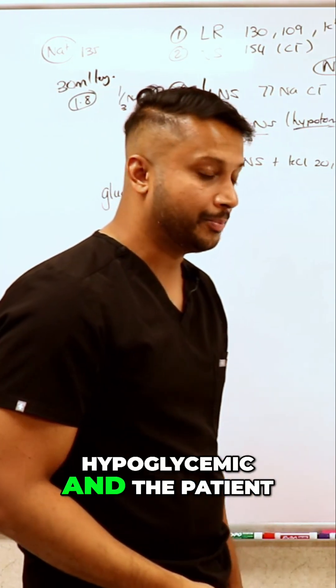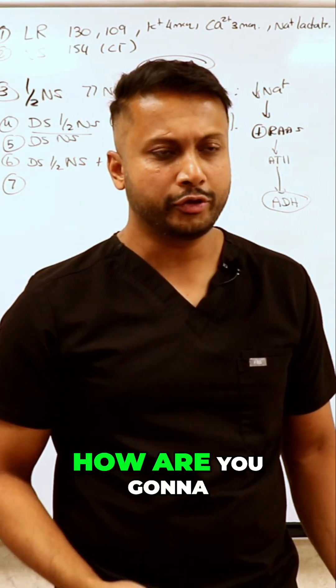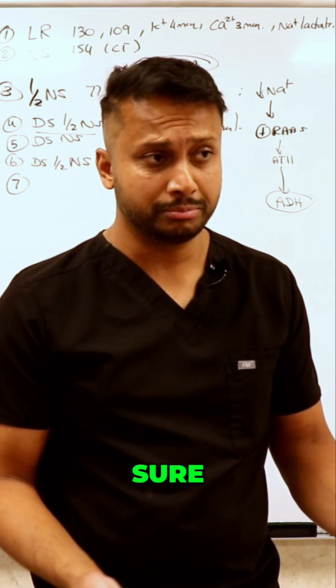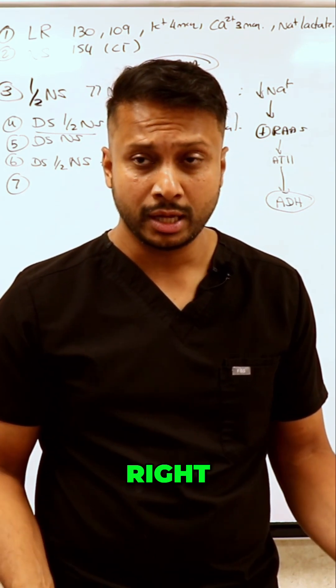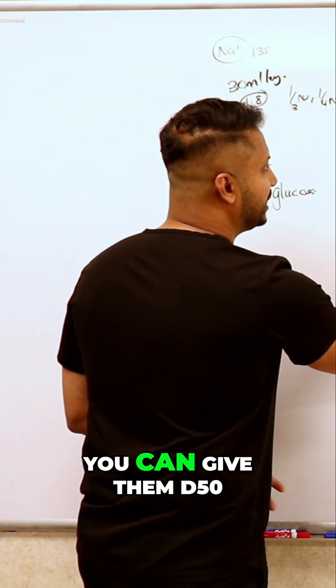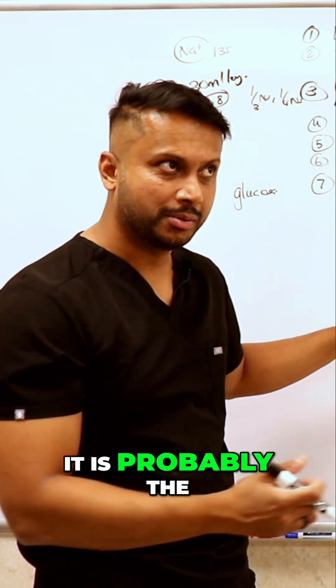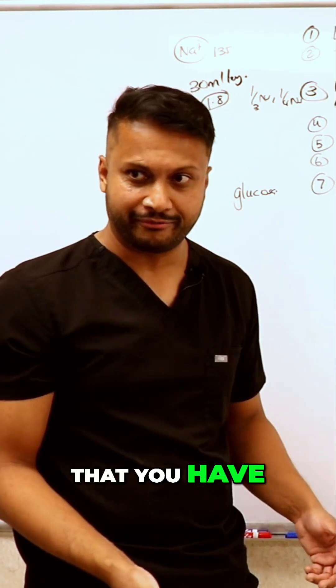If your patient is hypoglycemic and symptomatic, how are you going to treat them? You can give them glucagon, sure, but you can also give them sugar. Give D50. D50 is a push and it's probably the highest concentration of sugar that you have.